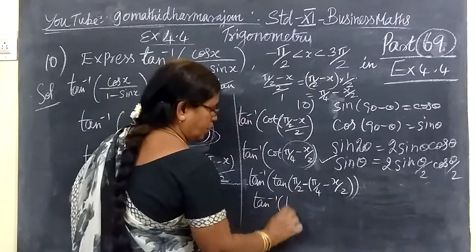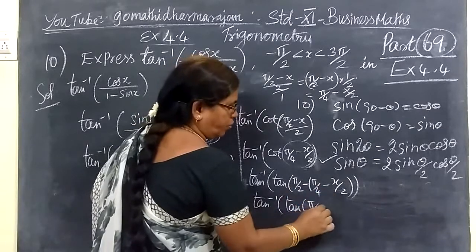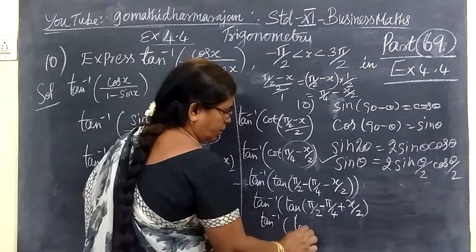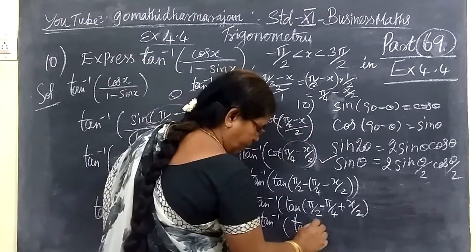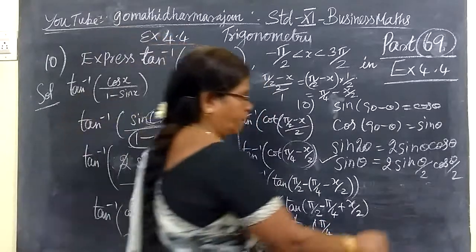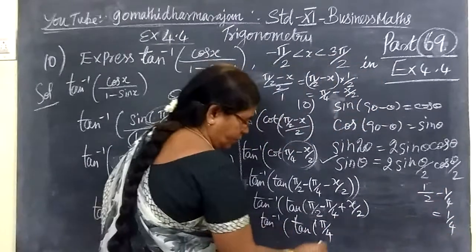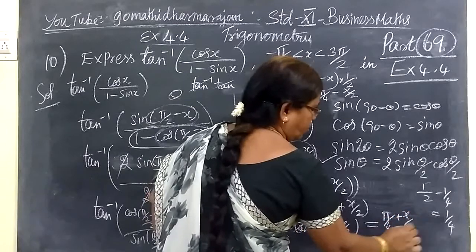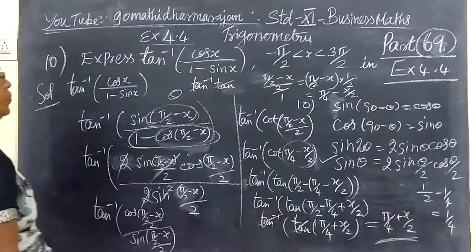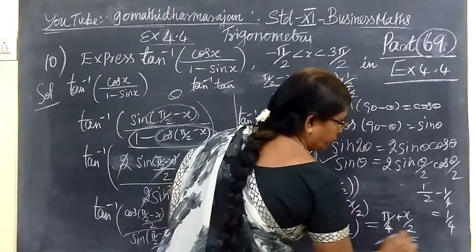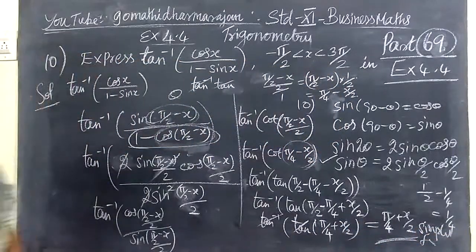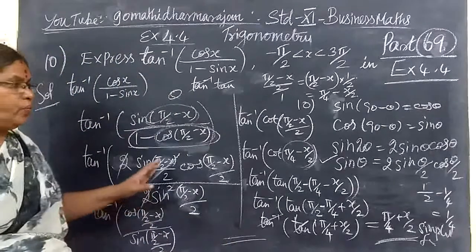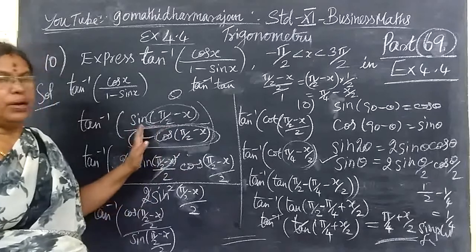So, tan inverse of tan of (π/2 minus 1/(1/2) minus π/4 plus x/2). So this is tan inverse of tan of (1/2 plus 1/4), sorry, π/4. So this is π/4 plus x/2. Now, cancel it. So this is equal to π/4 plus x/2. This is 2 plus 1. This is what I wanted to prove. So the answer is correct — the answer is π/4 over. This is the 5.1 portion. Thank you.